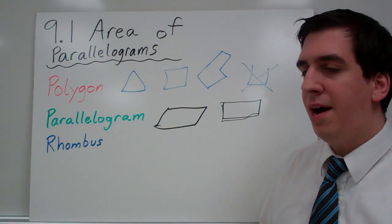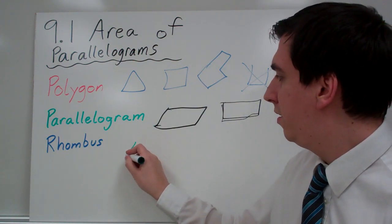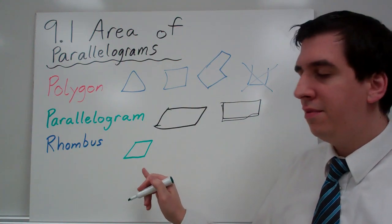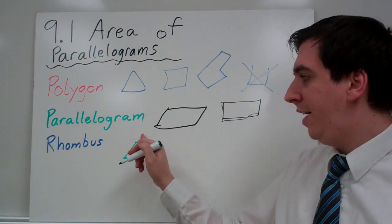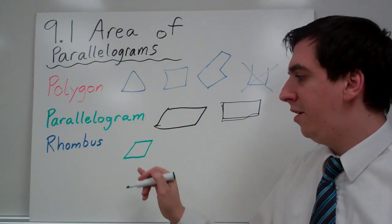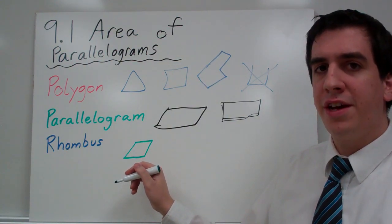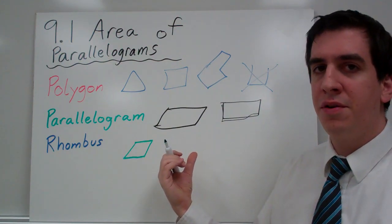We'll also look at a rhombus. A rhombus is a special type of parallelogram that has all sides as the same. All sides are congruent. This is also like a square that got blown over by the wind.